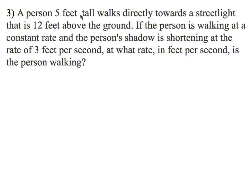A person five feet tall walks directly toward a street light that is 12 feet above the ground. If the person is walking at a constant rate and the person's shadow is shortening at the rate of three feet per second, at what rate in feet per second is the person walking? So here we go. Here comes the problem. Again, there's no equation here. You have to make it.